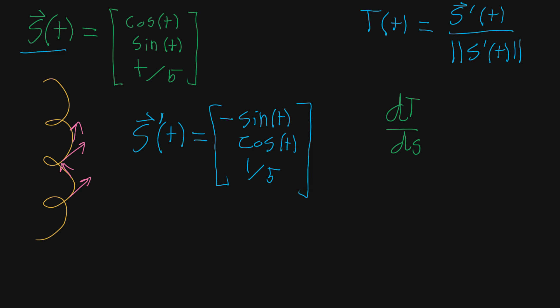Now we need to find the magnitude of s'(t). Taking the magnitude of s'(t) as a vector, we take the square root of the sum of the squares of each component: sine squared of t, cosine squared of t, and one-fifth squared, which is one-twenty-fifth.